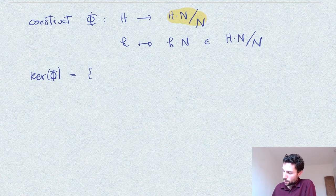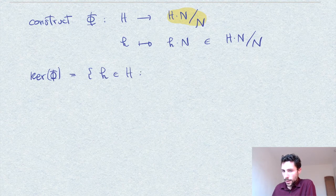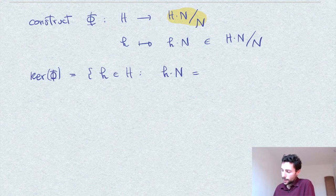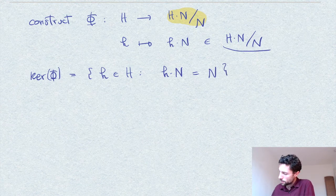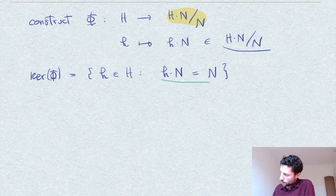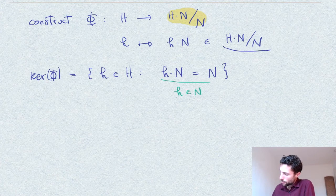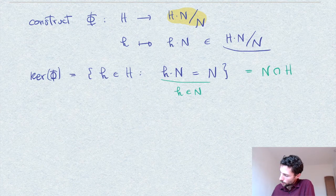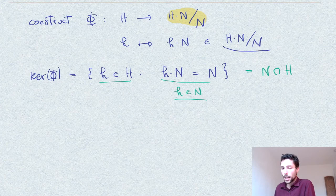What is the kernel of φ? By definition, it is the set of elements h in H such that hN equals the identity element in the group of cosets, which is N as a coset. This condition is equivalent to having h in N. So the kernel is equal to N∩H, described as the set of h in H such that h is in N.